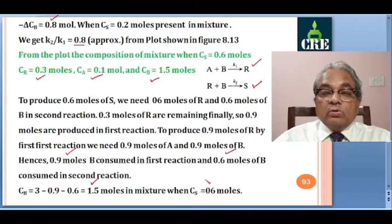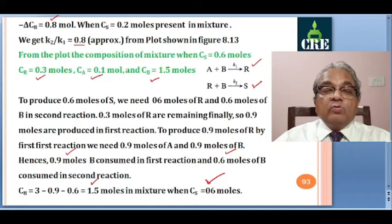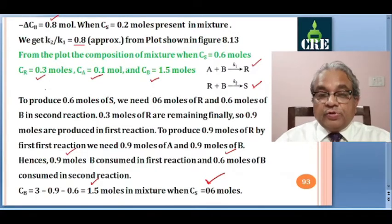So when 0.6 moles of S is in the mixture, we have this distribution: CS equals 0.6, CB equals 1.5, CA equals 0.1, and CR equals 0.3.